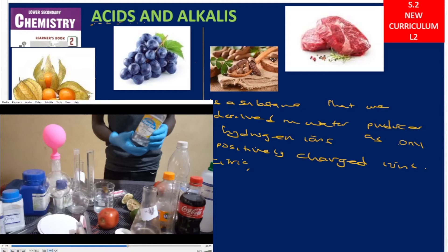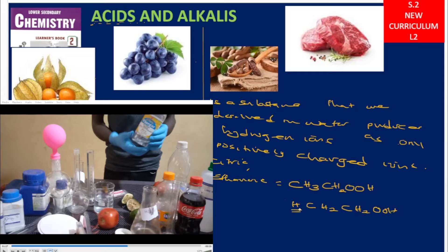All acids in chemistry, when it comes to their formula, have to start with the letter H. For example, ethanoic acid — also called vinegar — is written as CH3COOH, which we can break down as starting with H. This is an organic acid. We also have methanoic acid, also called formic acid, tartaric acid, and many other organic acids.